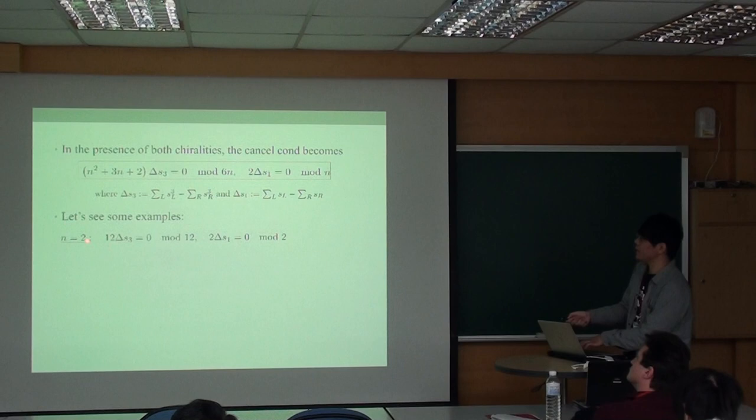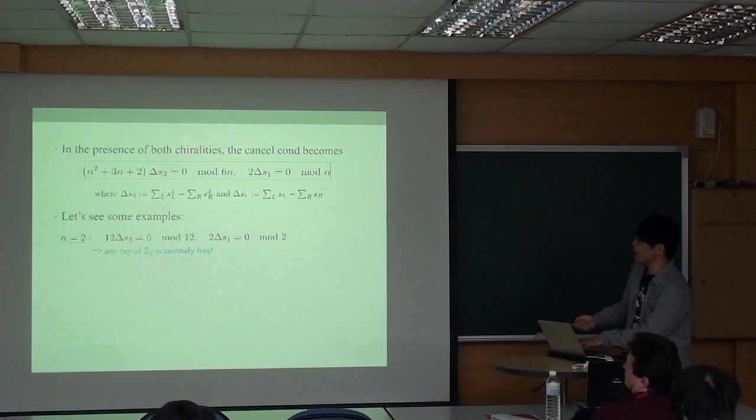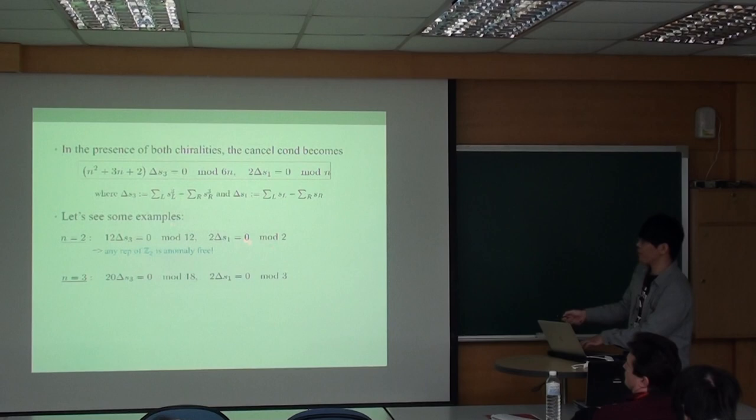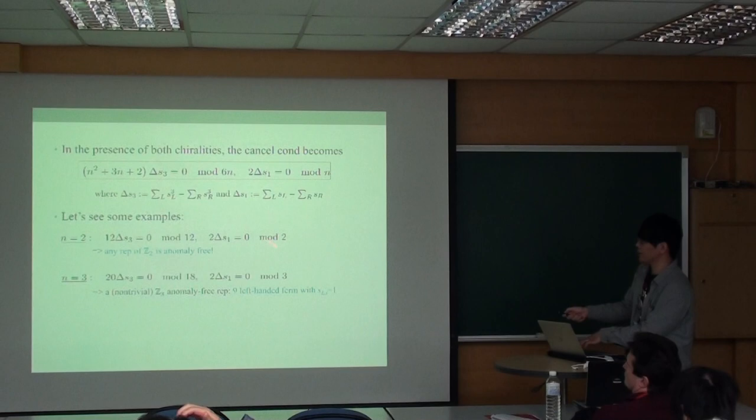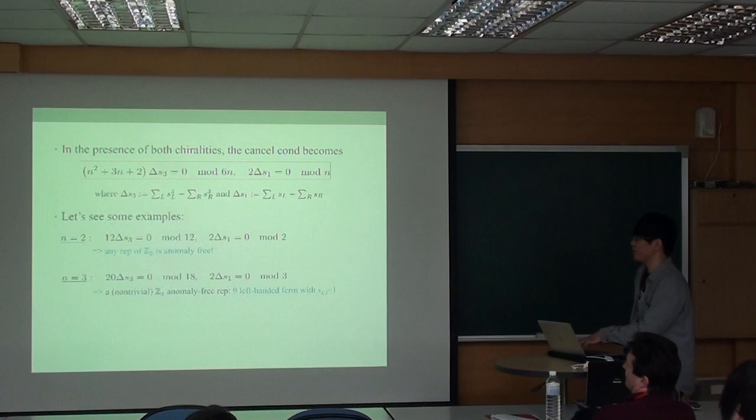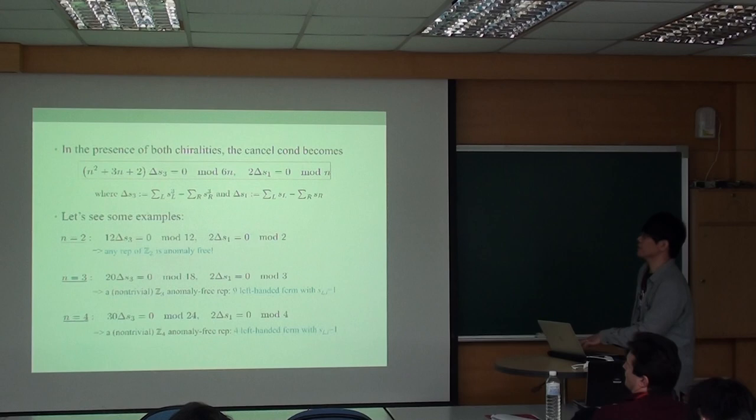Here are some examples. For N equals 2, we have this set of equations, which means any repetition of Z2 symmetry is anomaly-free. For N equals 3, we have this condition, and the N equals 3 condition can be satisfied by nine left-handed Weyl fermions or three unique Z3 charges. And so on, we can find many examples by just solving these equations.